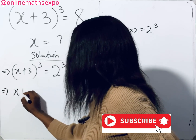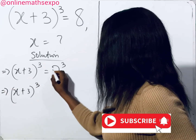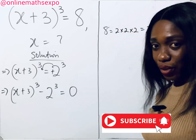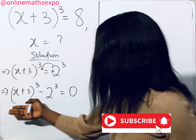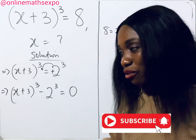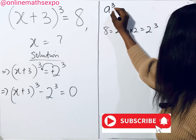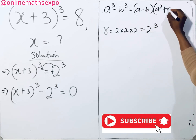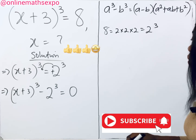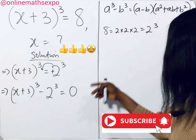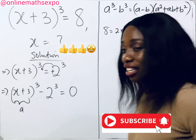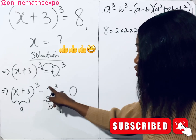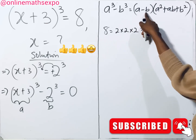Now we rewrite this as (x + 3)³ minus 2³ equals zero. When you look at this critically, it reminds you of a formula in algebra: a³ − b³ = (a − b)(a² + ab + b²). In our expression, (x + 3) becomes our a and 2 becomes our b, because we have two cubes with a subtraction sign in between — just like the formula.